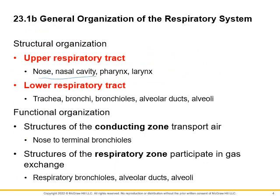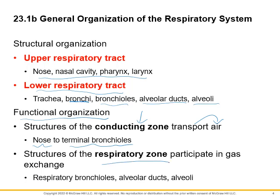Upper respiratory tract structures include the nose, nasal cavity, pharynx, and larynx. Lower respiratory tract includes the trachea, bronchi — right and left bronchus — bronchioles, alveolar ducts, and alveoli. For the functional zone, we're either in a conducting zone where we're transporting the air — the tube system bringing air to the alveoli, from the nose to terminal bronchioles — or the respiratory zone where we're actually doing gas exchange, happening in the respiratory bronchioles, alveolar ducts, and alveoli.